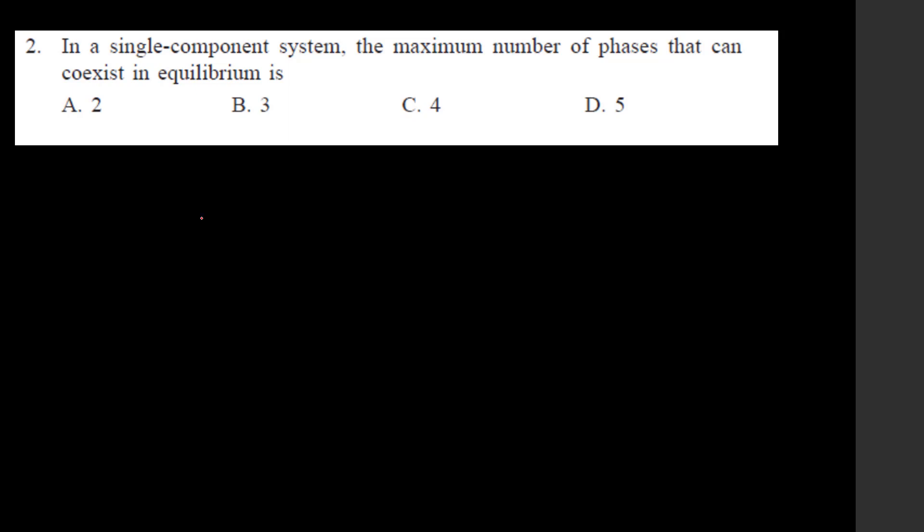F = C - P + 2. For maximum phases in a single-component system, C = 1. So P = C + 2 - F = 1 + 2 - F = 3 - F. To find P_max, F = 0, so P_max = 3 - 0 = 3.